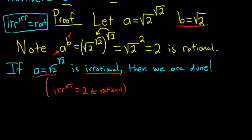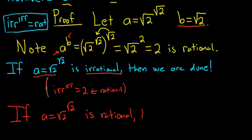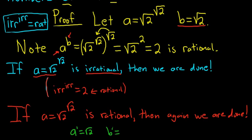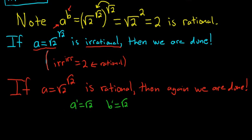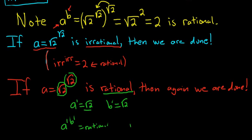Case 2: if a equals the square root of 2 to the square root of 2 is rational, then believe it or not, we are also done. In this case, let a prime equal the square root of 2 and b prime equal the square root of 2. We're saying that the square root of 2 to the square root of 2 is rational, so we have a prime to the b prime equals rational. But we all know that the square root of 2 is irrational, so we're basically saying we have irrational to the irrational equals rational. So in any case, we've shown that it's possible to come up with two numbers such that you have an irrational number raised to an irrational number equal to a rational number.